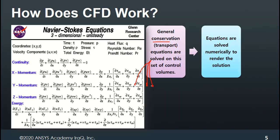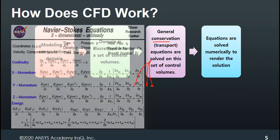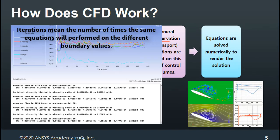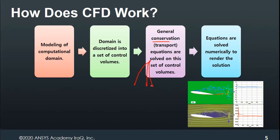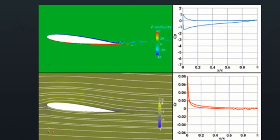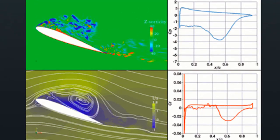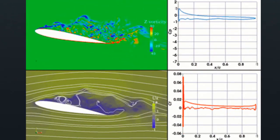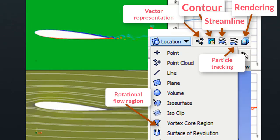By applying these governing equations on each element, we obtain a set of linear algebraic equations. By solving this set iteratively, we can find the results. As known from fluid mechanics textbooks, results can be represented in many ways under the title of field representation — by contour, vector, streamline, pathline, or streamline views. All of these visualization types can be found in ANSYS post-processing tools.